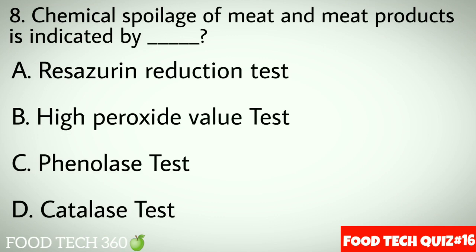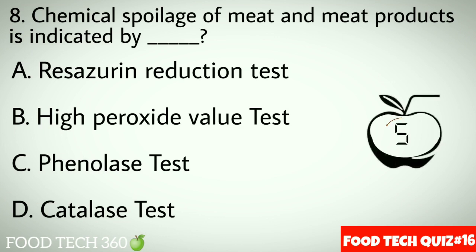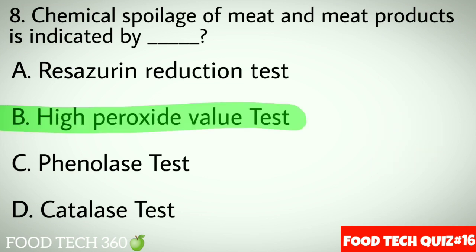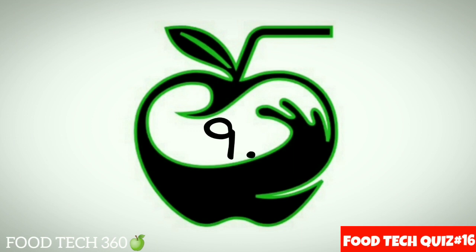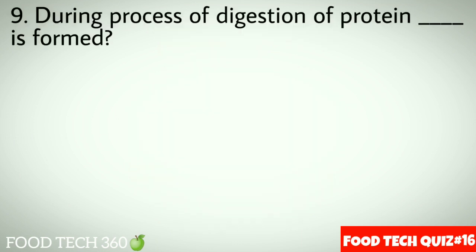Question No.8: Chemical spoilage of meat and meat products is indicated by dash. Options A: Resazurine reduction test. B: High peroxidase value test. C: Phenolize test. D: Catalyze test. Correct answer B: High peroxidase value test.